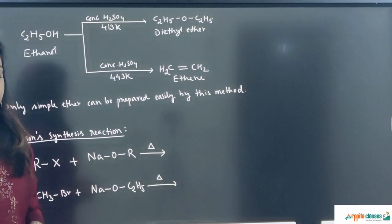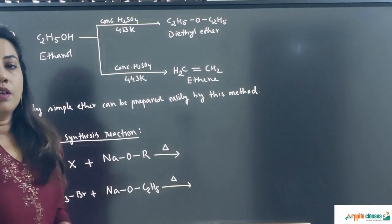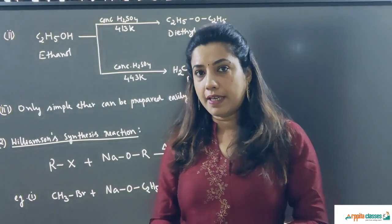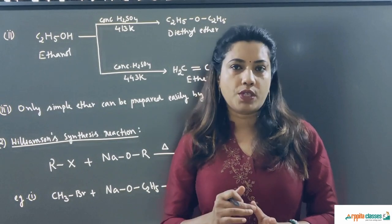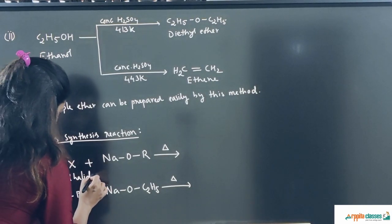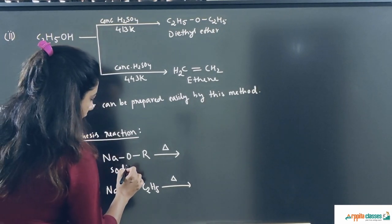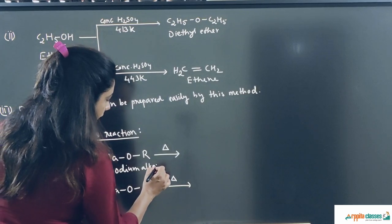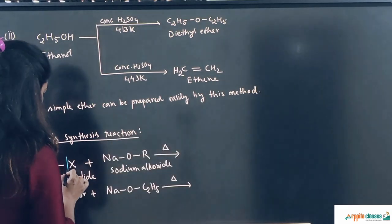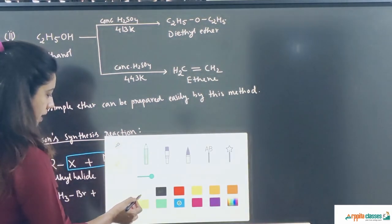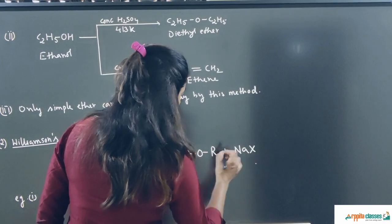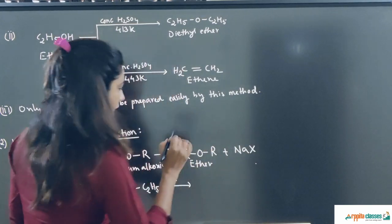The next method is the Williamson synthesis reaction, which is very important — it is a named reaction. In Williamson synthesis, the substrate is a primary alkyl halide (R-X) which is treated with sodium alkoxide (NaOR'). Sodium halide (NaX) comes out as a byproduct, and the remaining parts join to give an ether R-O-R'. This is the Williamson synthesis reaction.